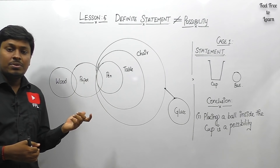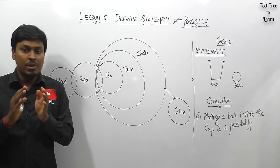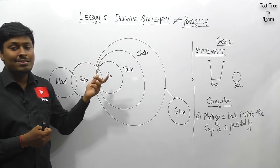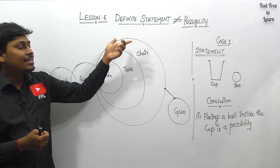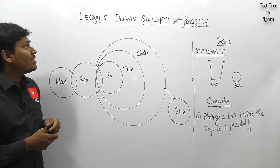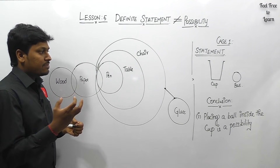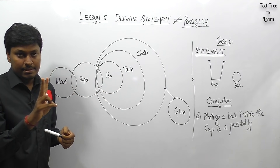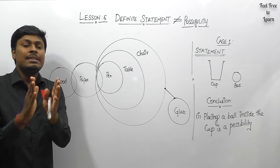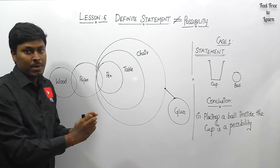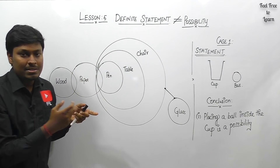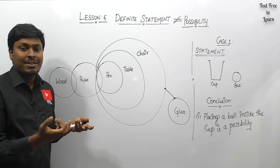Before watching this video, make sure you have watched lesson number three, which covers case number one of possibility. Many students ask about the concept of 'definite statement not equal to possibility' because they encounter it in many tests and need clarification. Possibility totally has two cases — case number one, taught in lesson three, and case number two covered here. Understanding the concept clearly is the only way to crack all syllogism questions.